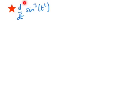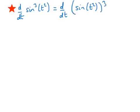The first exercise is to differentiate with respect to t, sine cubed of t squared. This means the derivative with respect to t of the sine of t squared, all cubed. To calculate the function numerically, you would take your value of t, square it to get a number, take the sine of that number, and then cube it.